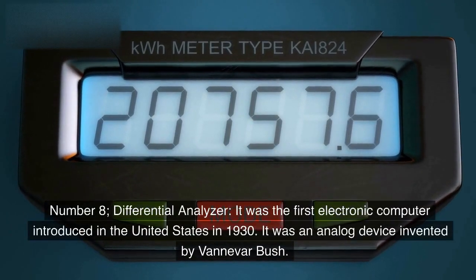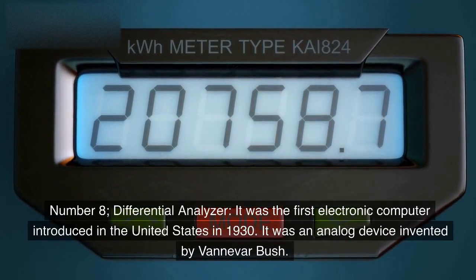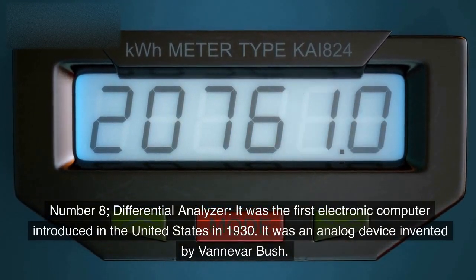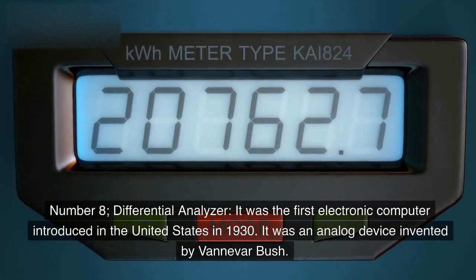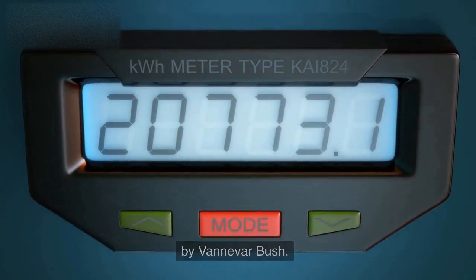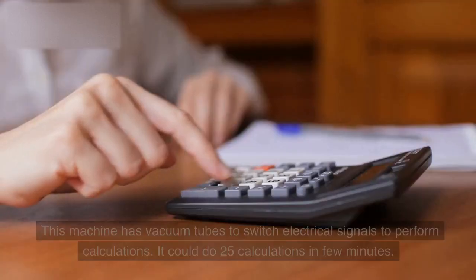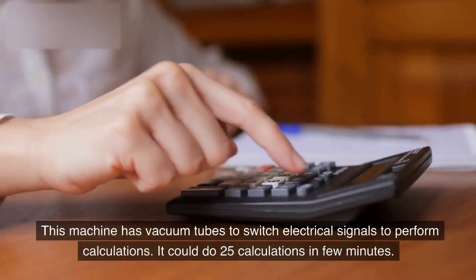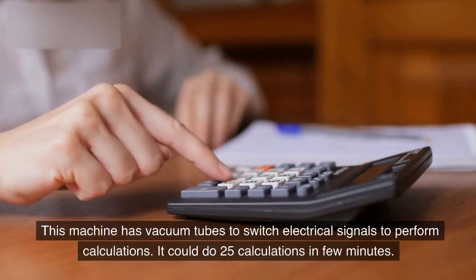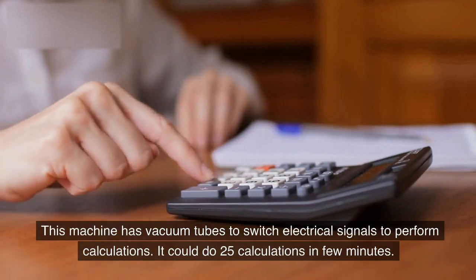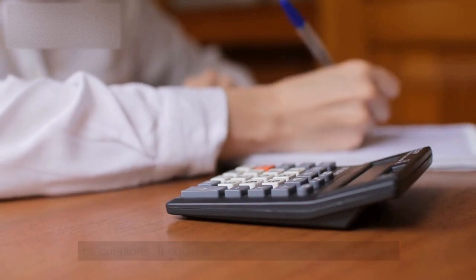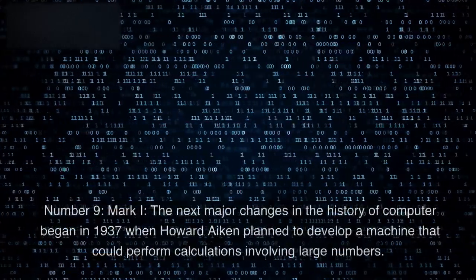Differential Analyzer. It was the first electronic computer introduced in the United States in 1930. It was an analog device invented by Vannevar Bush. This machine used vacuum tubes to switch electrical signals to perform calculations. It could do 25 calculations in a few minutes.